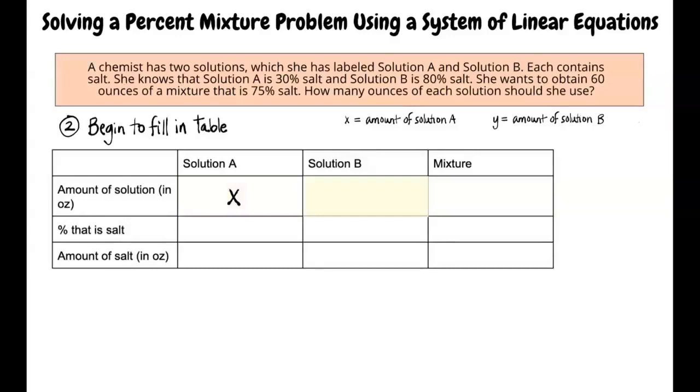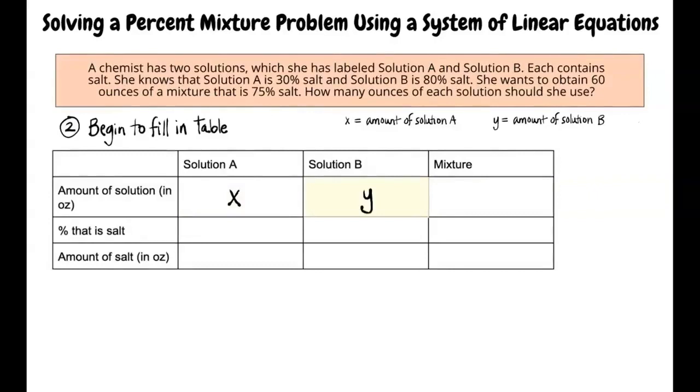What should be written in this box? We should input y for this box because solution B is different from solution A. That's correct. This box is the total amount of the two solutions mixed together. In the problem statement it was given that the new solution will have a total volume of 60 ounces. Therefore we can put 60 in this box.